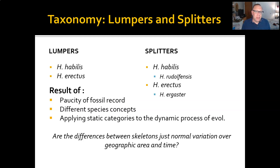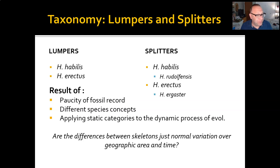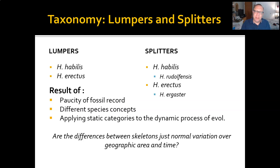For early genus Homo, we have two different perspectives on how many species there are. The lumper perspective — lumpers being very conservative with their criteria for a new species — views there as being just Homo habilis, a very small-bodied hominin found only in Africa, and Homo erectus, a larger-bodied hominin found in Africa and very soon after in other parts of the world. Splitters, on the other hand, view habilis as actually two different species — habilis and rudolfensis — and view erectus as two different species — erectus and ergaster.